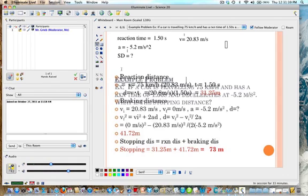So first of all, we want to calculate the reaction distance. So that distance is going to equal velocity times time. So we'll just put in the velocity of 20.83 meters per second and multiply that by 1.50 seconds. And that will give us a value of 31.25 meters. So this is the reaction distance.